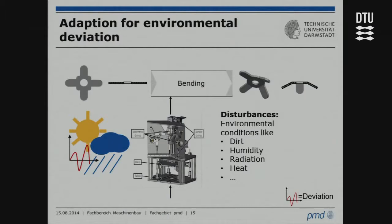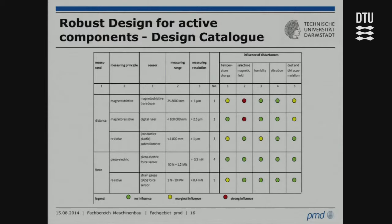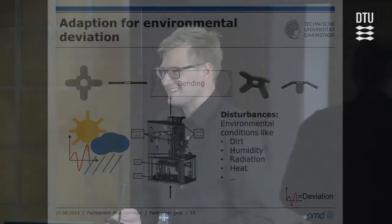The first area where we worked together was the adaptation for environmental deviations. These occur in the form of disturbances such as dirt, humidity, radiation, and heat. What we developed was a design catalog for sensors — focusing first on sensors in the active system. The catalog contains the measuring principles, some additional information, and disturbances and their influence on the sensor.